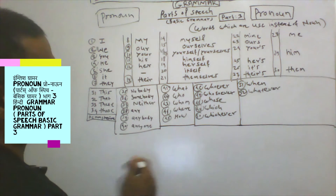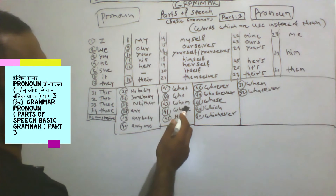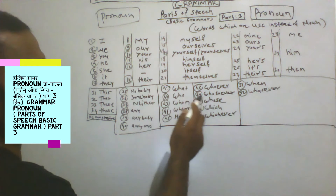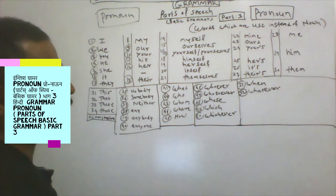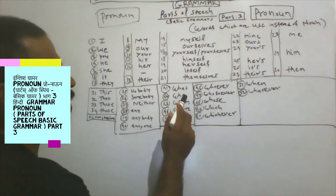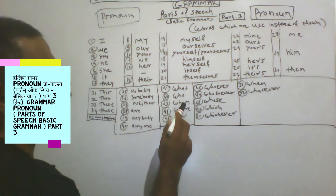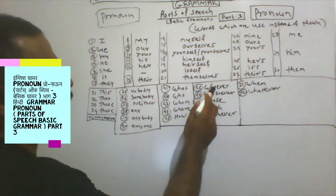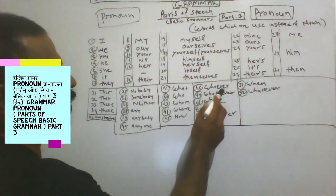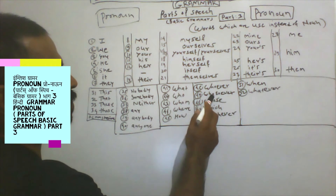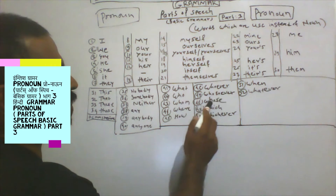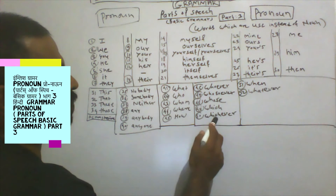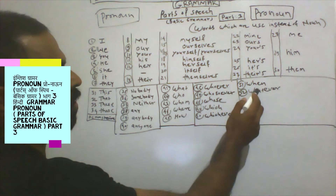Then come the WH interrogative pronouns. The interrogative pronouns are: what, who, whom, where, how, whoever, whosoever, whose, which, whichever, when, whatever. You can memorize and recite all these pronouns.